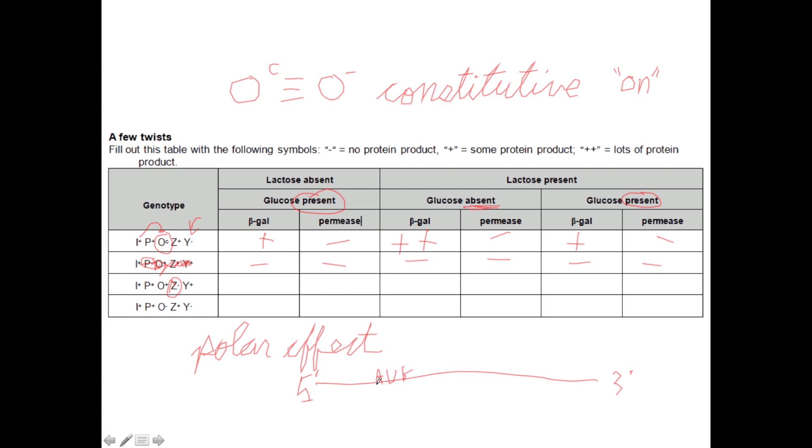In a normal effective polycistronic mRNA, that ribosome will latch on at the beginning, make the first protein and continue on to make the second one. Because the Z is defective right here, let's say it craps out early on and the ribosome hits a stop codon early on in the reading frame. That means that it's not able to go any further and we're not going to make any product.